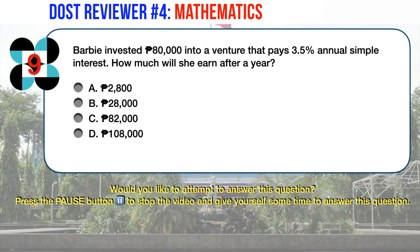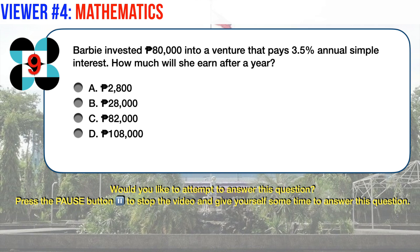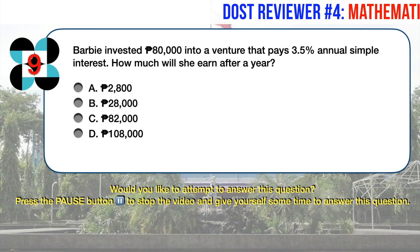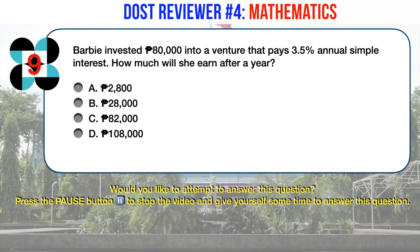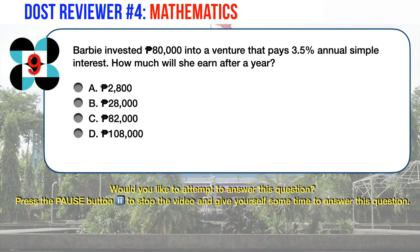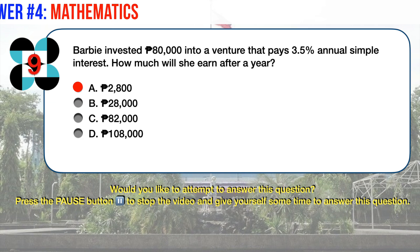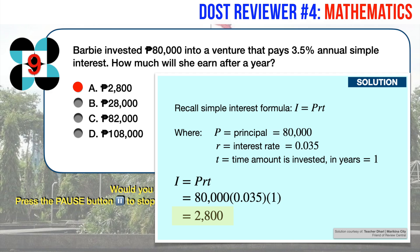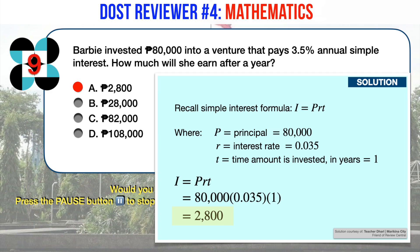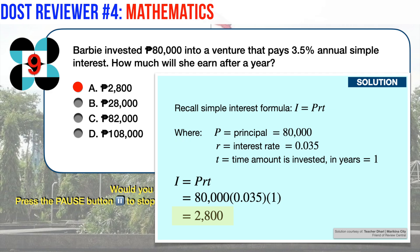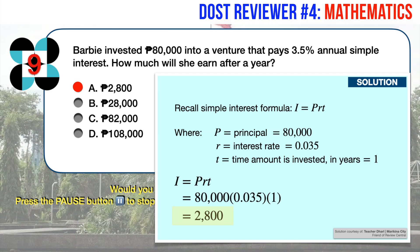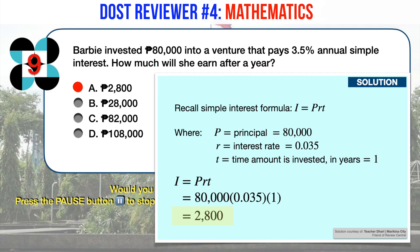Math question number 9. Barbie invested 80,000 pesos into a venture that pays 3.5% annual simple interest. How much will she earn after a year? The correct answer is A, 2,800 pesos. Recall the simple interest formula: I equals PRT, where P is 80,000 pesos, R is 3.5% or 0.035, and T is 1 year. Plugging in the values, we quickly arrive at 2,800 pesos.